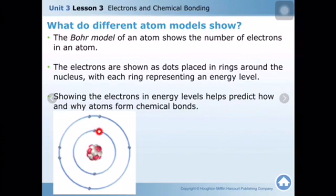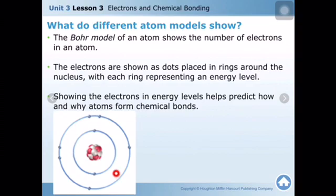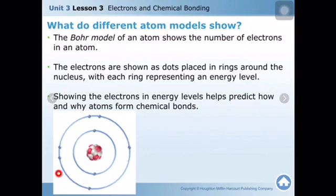In the first energy level, a maximum of two electrons can be present. In the second energy level, a maximum of eight electrons can be present. In this oxygen atom, there are six electrons in the second energy level, and this element needs to have eight electrons in its outermost energy level — these are called valence electrons. Two electrons are missing, which is why oxygen makes chemical bonds to reach eight electrons.